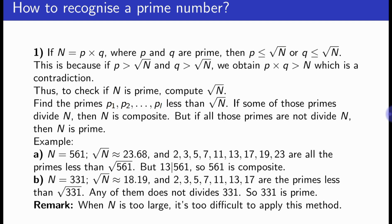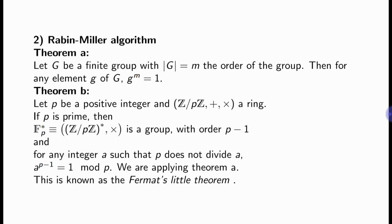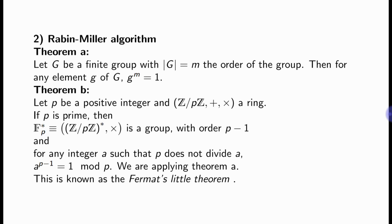When n is too large, this method is too difficult to apply — that is why we now talk about the Rabin-Miller algorithm. Before that, let us recall Theorem A and Theorem B. Theorem A is about the order of a finite group. Theorem B is Fermat's theorem: for any integer A such that P does not divide A, A raised to the power P minus 1 is congruent to 1 modulo P. Taking the contrapositive: if there exists an integer A such that P does not divide A and A to the power P minus 1 is not congruent to 1 modulo P, then P is not prime. This is the idea behind the Rabin-Miller algorithm.